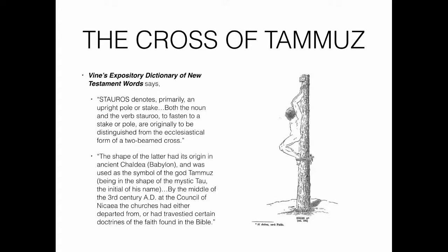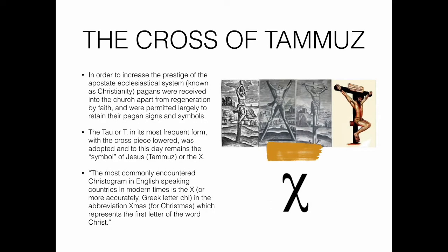By the middle of the third century AD, at the Council of Nicaea, the churches had departed from or travestied certain doctrines of the faith found in the Bible. In order to increase the prestige of the apostate ecclesiastical system known today as Christianity, pagans were received into the church apart from regeneration by faith and were permitted to retain their pagan signs and symbols. These pagan people were allowed into the church without being born again or following the Messiah — they brought all their old pagan symbols and celebrations with them.